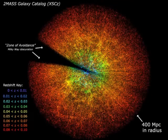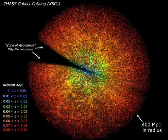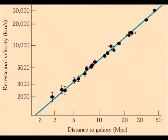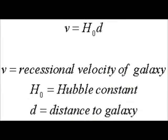Hubble realised that the universe is expanding. The spectra of galaxies all show redshift, so they're all moving away from us. The amount of redshift gives recessional velocity — how fast the galaxy is moving away. Plotting recessional velocity against distance shows that they are proportional; that is, the speed that galaxies move away from us depends on how far away they are. This suggests that the universe is expanding and gives rise to Hubble's Law.